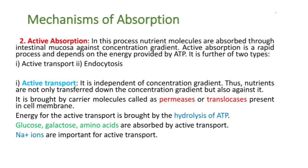Active absorption: in this process nutrient molecules are absorbed through intestinal mucosa against the concentration gradient. Active absorption is a rapid process and depends on energy provided by ATP. Therefore it is an ATP-dependent process, with energy provided by the hydrolysis of ATP. It is of two types: active transport and endocytosis.